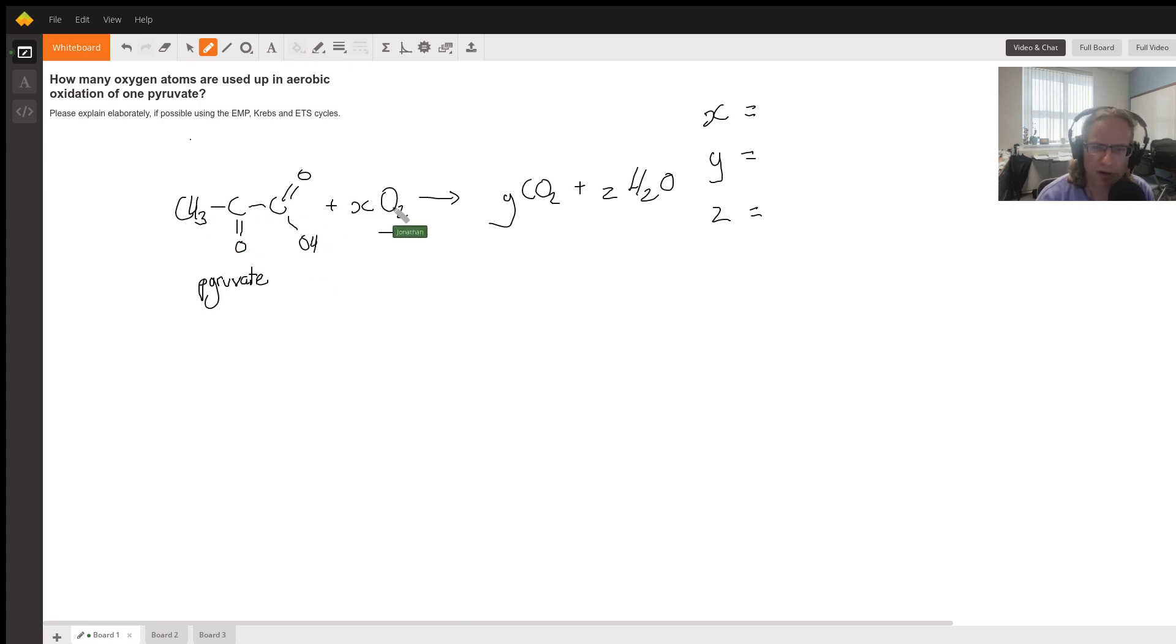When we convert pyruvate into carbon dioxide and water, there are several ways to do this. I'll get to what the question has asked me to use—the Krebs cycle and electron transport chain—in a second, but this is a really simple way to do it that just balances out the number of atoms in the oxidation process.